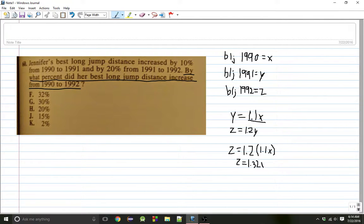This means that in 1992, the best long jump was 132% of what it was in 1990. Or Z equals 1.32X. So, this means that it's 32% greater than what it was in 1990. That means the correct answer is F.